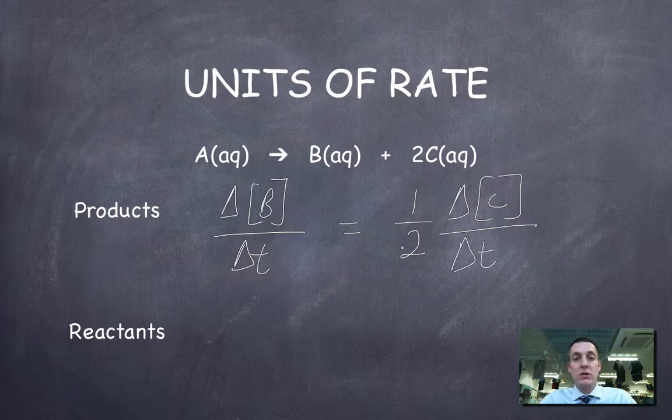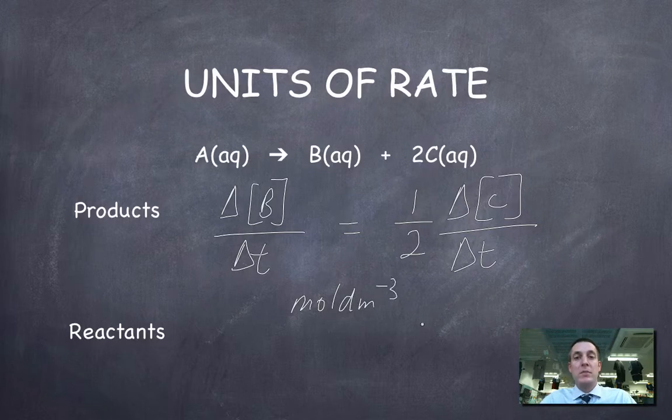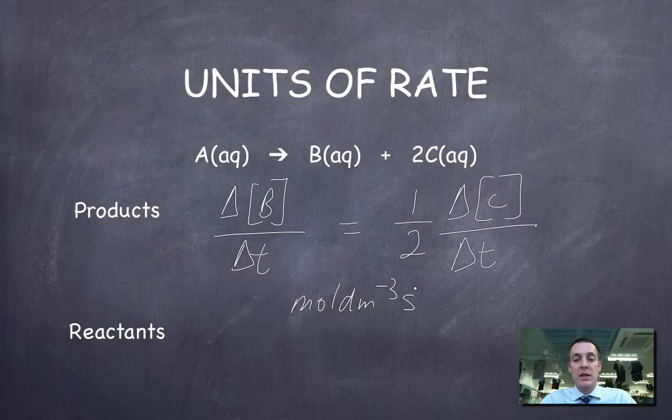And regardless of which formula I use to express this rate, I'll see that I'm dividing a change in concentration, so that's moles per dm cubed, dividing that by a time, and most often that will be in seconds. So moles per dm cubed per second are the most common units that we'll see for a rate.